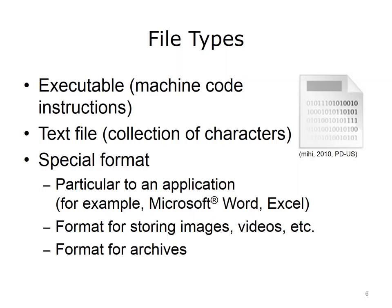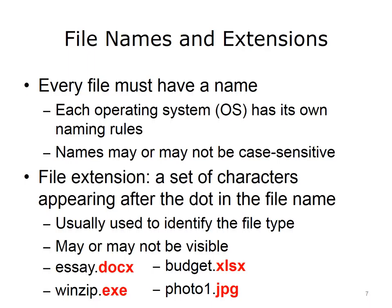There are also specially formatted files for storing images and videos, and files that are formatted to be an archive. Every file must have a name. Each operating system, or OS, has its own naming rules. For example, early releases of Microsoft Windows had a file name limit of eight characters. Also, some operating systems have case-sensitive file names, others do not. Part of the file name is the file's extension, which is a set of characters appearing after the dot in the file name. The extension usually identifies the file type, which in turn determines what a user can do with the file.